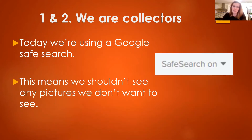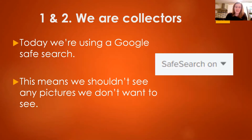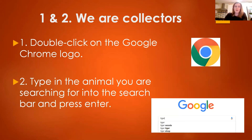Today we're going to use a Google Safe Search. This means once you turn the Safe Search on, you shouldn't see any pictures you don't want to see. I'll show you in a minute how to turn the Safe Search on. The first thing we're going to do is double click with your left mouse button on the Google Chrome logo — a fast click, click, click like that.